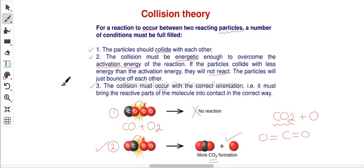When studying collision theory, make sure you can outline these three different points. They may ask what the main collision theory conditions are for a chemical reaction. Not any two collisions can cause a chemical reaction — the collisions should be, number one, energetic enough as mentioned in the second point, and number two, they should have correct orientation in order to form a product.